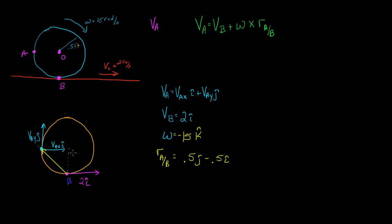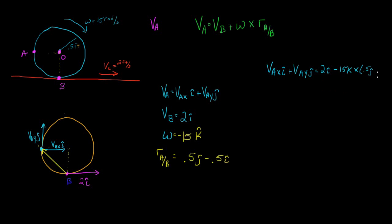Going from point B up 0.5 gets us to the center, and then we go over one radius to the left. Now we have all this information and can substitute each variable into the equation. We get VAX in the I direction plus VAY in the J direction, equal to 2i plus minus 15k crossed with 0.5j minus 0.5i.